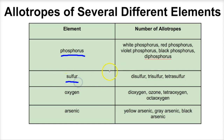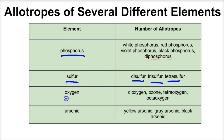If you take a look at sulfur, sulfur has approximately a dozen different allotropes, and you can see three of them here: disulfur, trisulfur, and tetrasulfur. These are all sulfur — they're all chemically the same thing, the element sulfur, but they exist in different forms.